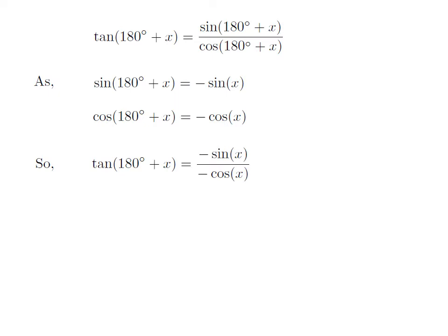Let us apply the above identities in the expression for tangent of 180 degrees plus x. So tangent of 180 degrees plus x is equal to minus sine of x divided by minus cosine of x. The minus in the numerator and minus in the denominator will cancel out.